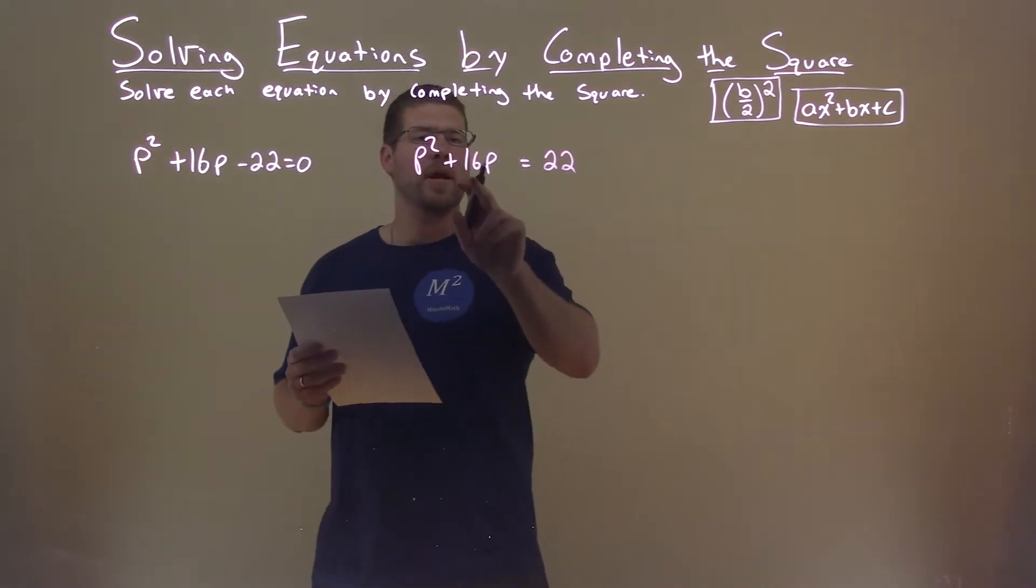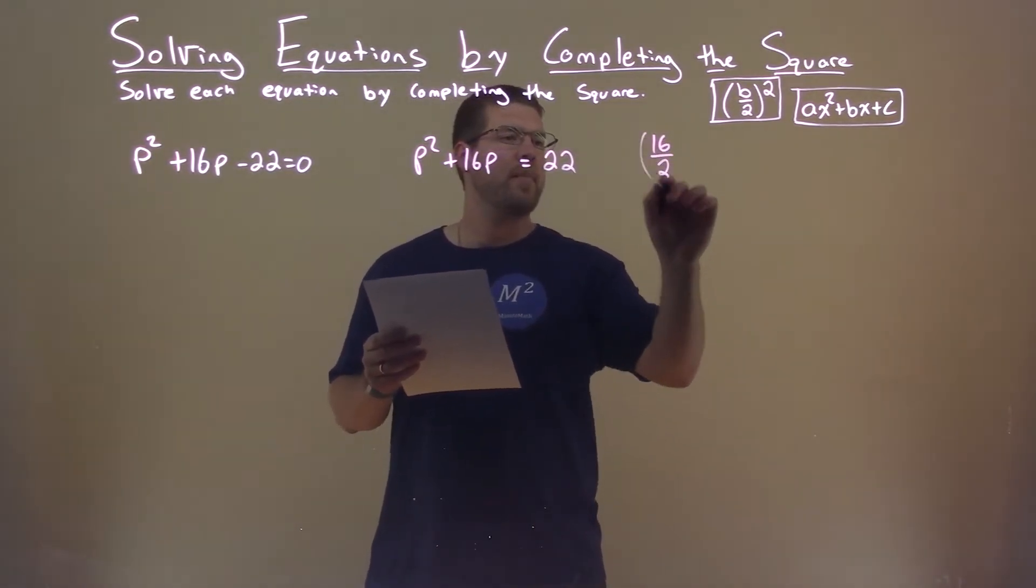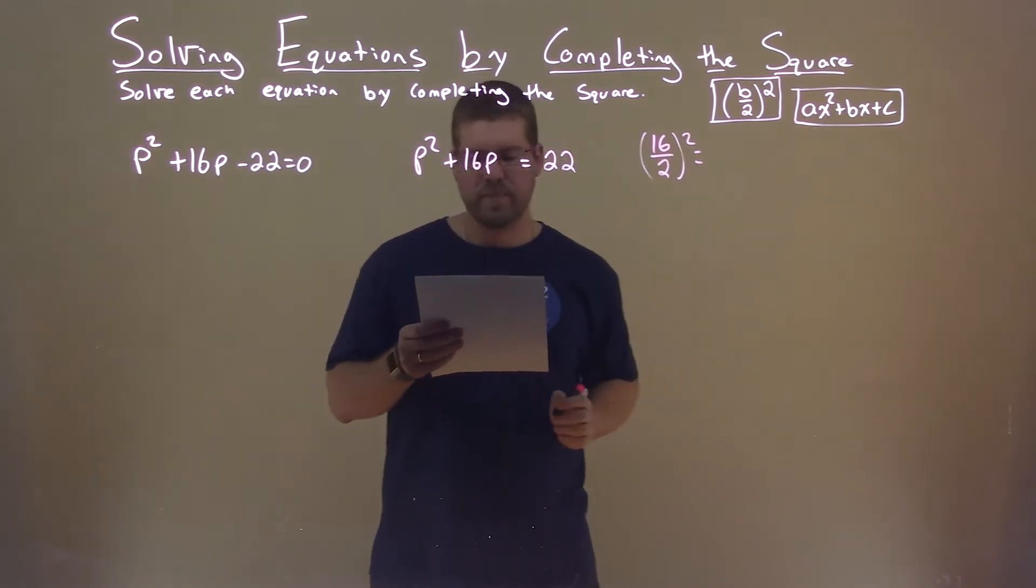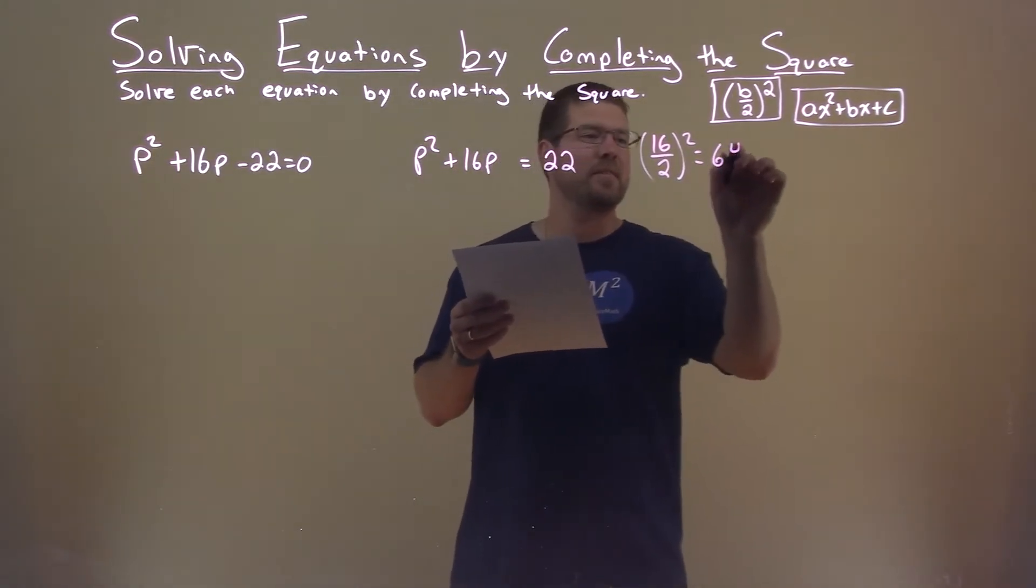Now from there I'm looking at my b value, which is 16. I'm going to divide that by 2, and I'm going to square it. Well, that comes out to be a 64.